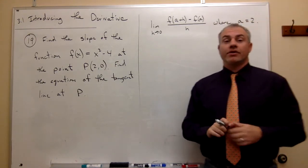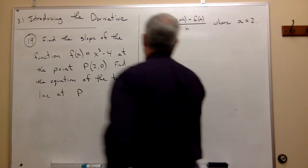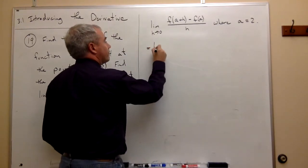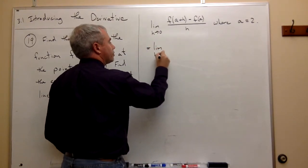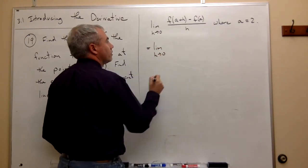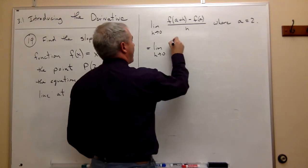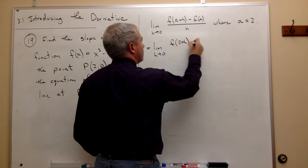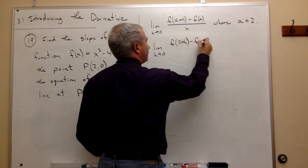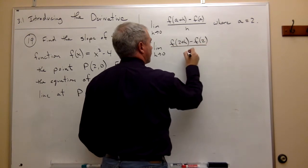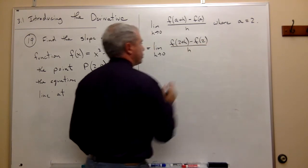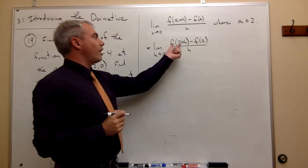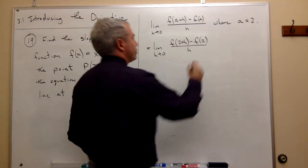Now that we know that a = 2, I can rewrite this. I can say that this is the same thing as the limit, as h goes to 0, of [f(2+h) - f(2)] / h. Now let's figure out what f(2+h) is.